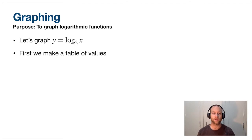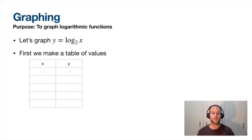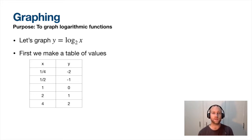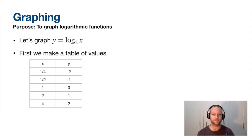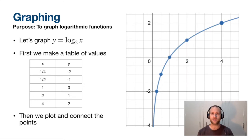First things first, we make a table of values. Here's x and y. I pick these x values specifically - I took powers of 2 because it's log base 2, and this gave me nice y values. That's why you see 1/4 because that's 2 to the negative 2, and 1/2 because it's 2 to the negative 1. I picked these values very specifically, and that's something you'd need to know when making a table - specific x values make your life a lot easier. Then we plot these and connect the points. Imagine arrows at the end of the graph.